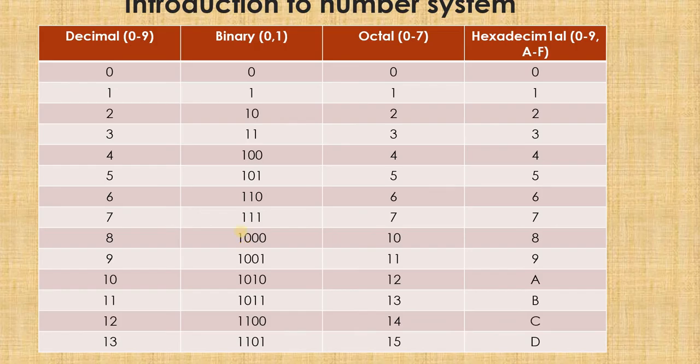Similarly, in the octal number system, I have from 0 to 7 as you can observe. From 0 to 7, then I will make use of again the same numbers in combination with 1. How in the decimal system after 9 I made use of 10, 11, here also I will make use of, after 7, I will make use of 10, 11, 12, 13, 14, 15, 16, 17, then again I will start from 20, 21, 22, 23 like this.